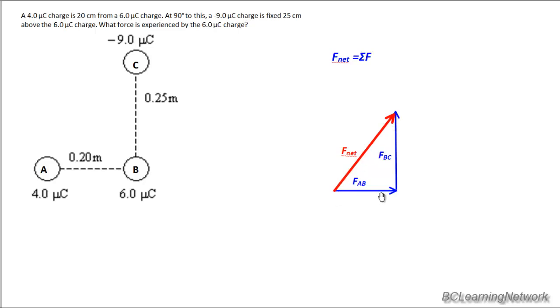And you can imagine that if we know what FAB is and what FBC is by calculation, Fnet will simply be found using the Pythagorean theorem. We could get the direction very easily using simple sine, cosine, and tangent functions. So our next step is to figure out what the values of FAB and FBC are. And for that we're going to use Coulomb's law.